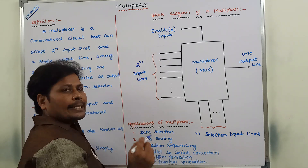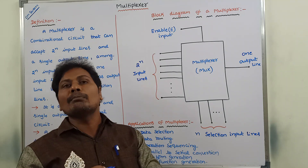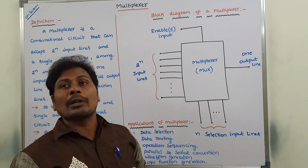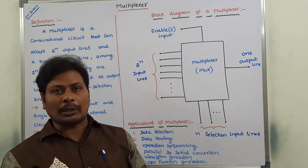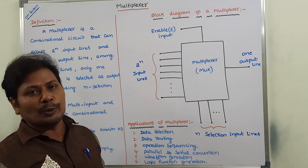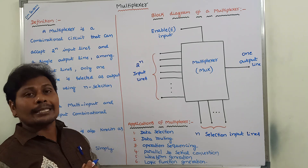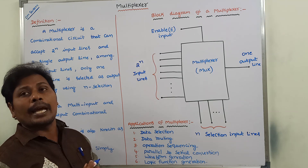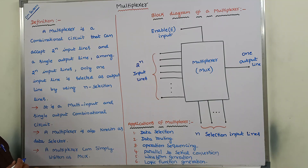So we can say that a multiplexer is a combinational circuit that can accept 2^n number of input lines. Among those 2^n input lines, only one input line can be selected as the output line by using n number of selection input lines, and this can be done only when the enable input E is equal to 1. A multiplexer can also be called a data selector, because we select one data among 2^n number of data lines.